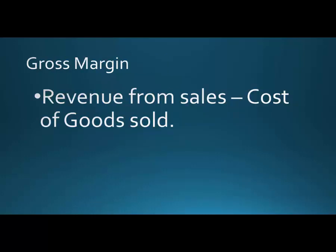The next block is the gross margin. That's straightforward — we take our revenue from sales and back out the cost of goods sold we just calculated, and that gives us the gross margin. Sometimes this is simply called our margin.